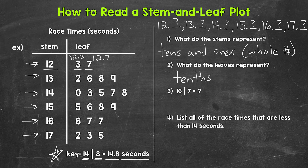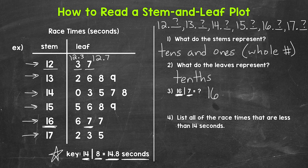Let's move on to number three: we have a stem of 16 and a leaf of 7. Looking at the stem and leaf plot, stem of 16 and leaf of 7. Putting that stem together with that leaf gives us 16.7 — so 16 and 7 tenths.